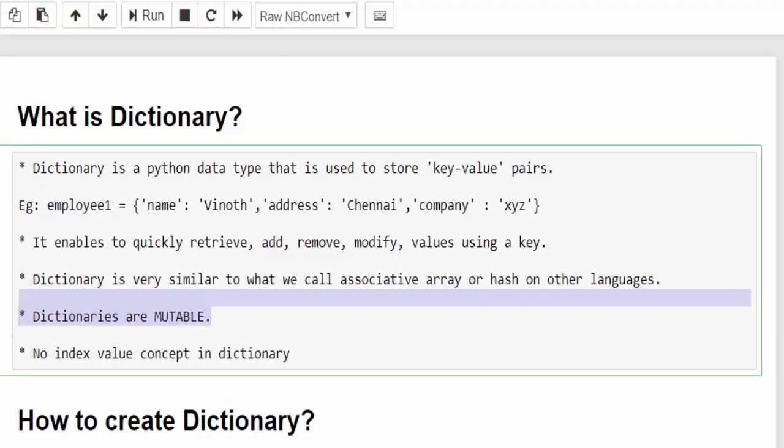Dictionaries are mutable—we can add, remove, and modify values, similar to list data type. There is no index value concept in dictionary. This is another reason when we try to retrieve a value from a big chunk of data, it will find the exact value quickly rather than going one by one like index 0, 1, 2.